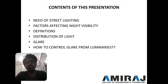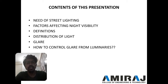First of all we have to study about the need of street lighting. Second thing is factors affecting night visibility. Third one is some basic definitions. Fourth one is distribution of light. Fifth one is glare. And sixth one is how to control the glare from the luminaries.